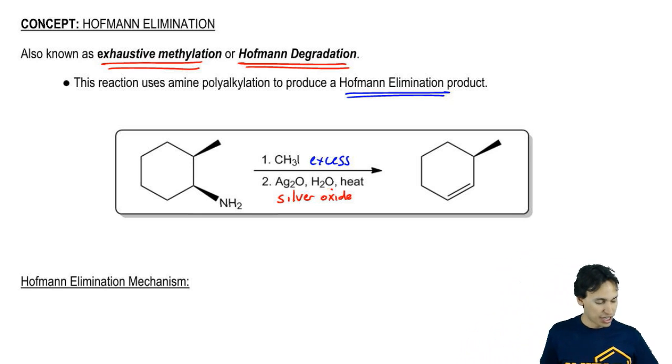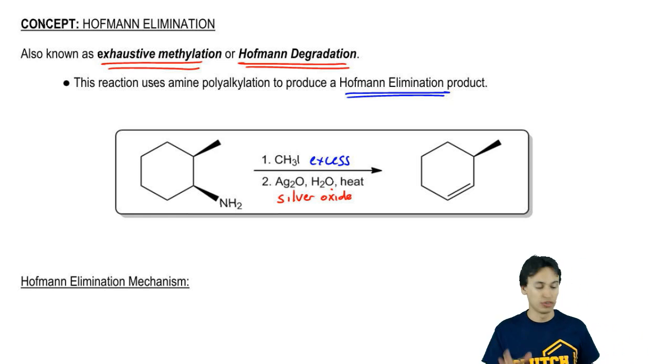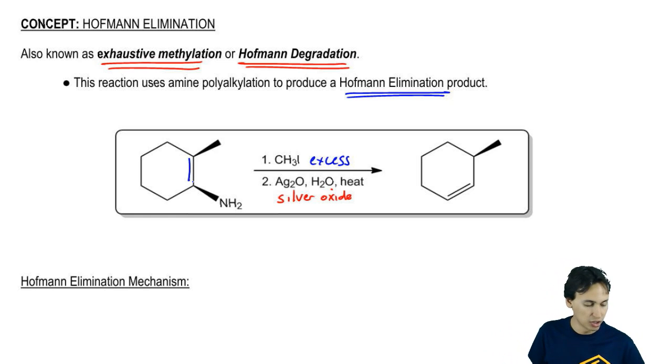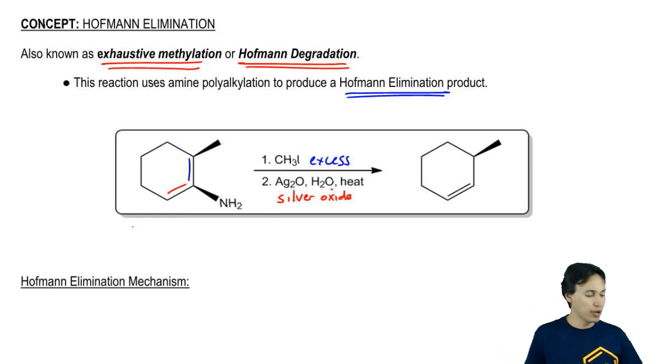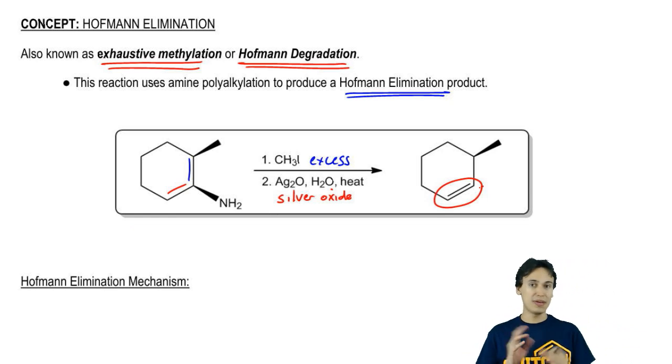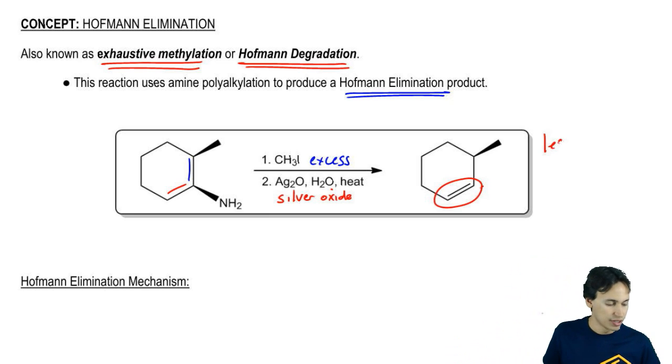Notice that my nitrogen had two options of where to eliminate. I could have either eliminated along the blue line here or along the red line here. One of them was more substituted, one of them was less substituted. I went with the least substituted product. It's not going to be a major, minor product scenario here. You're pretty much almost going to get 100% of the less substituted product. We'll talk more about that when we get into the mechanism, but less substituted.